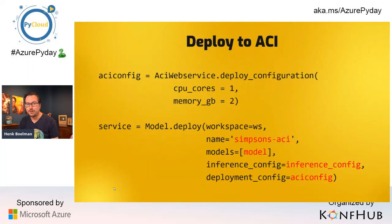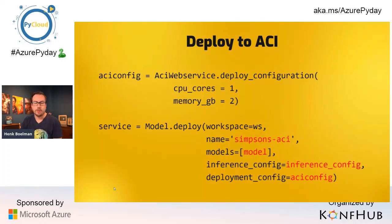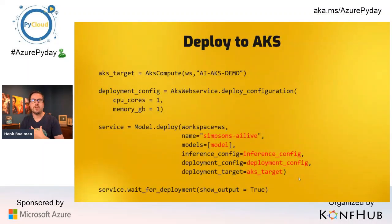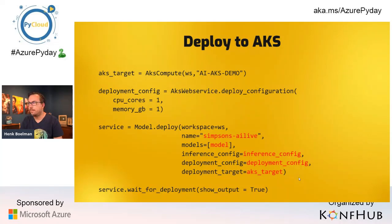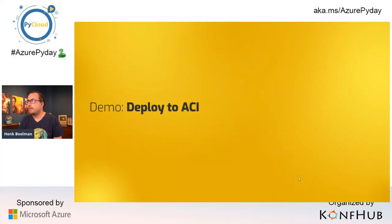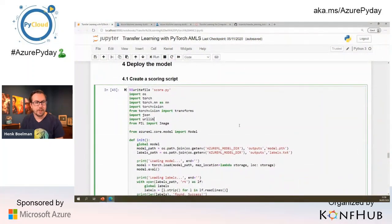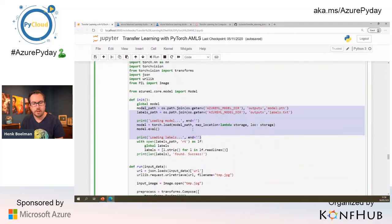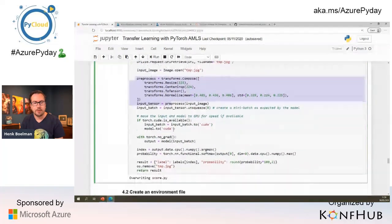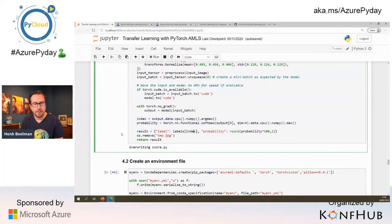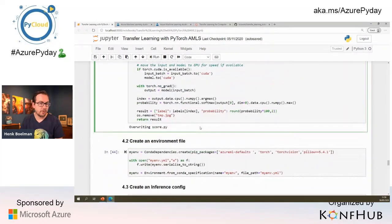The scoring.py file has two methods: an init() method that loads the model (since loading takes time), and a run() method hit by every request — you do image pre-processing, run your prediction, and return results. An environment file is a conda environment file listing required packages. You combine these in an InferenceConfig, then deploy with a DeploymentConfig to ACI (one CPU, one to two gigabytes of memory) or AKS. For AKS, you first connect your Azure ML Studio to the Kubernetes cluster, then the deployment is the same.